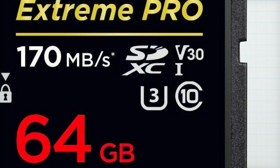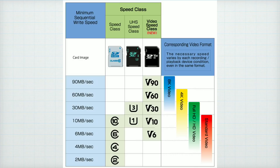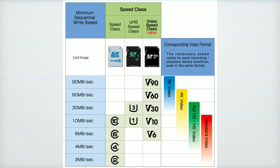Now let's take a look at speed ratings. Over the years they have developed a number of different speed ratings, and now all of them are on the cards you'll buy today. We're going to look at three different logos on this card that all mean the same thing: a V rating at the top, a U rating below it, and a 10 with a circle around it. All of these speed ratings refer to write speed on the cards, and write speed is important because a video camera sends data at a very constant rate to the card, and you need to make sure the card can support what your camera is streaming to it.